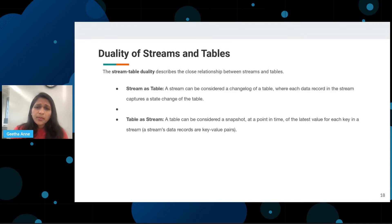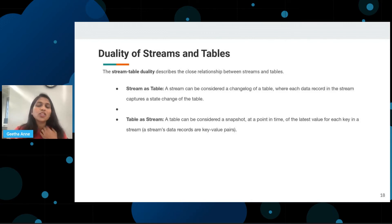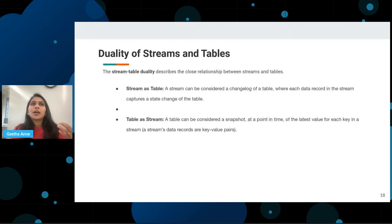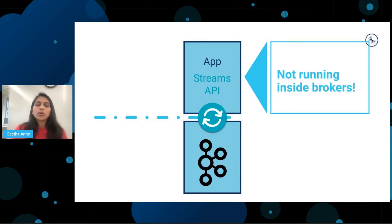Moving on, there's a bit more about stream-table duality: a stream is a table in disguise and a table can be a stream in disguise. A table can be turned into a real-time stream and a stream can be turned into a table by replaying the change log from beginning to end, giving you an opportunity to create a table out of a stream. You can also reiterate on keys and values, transforming a table into a stream. This is the duality the Kafka Streams world revolves around.